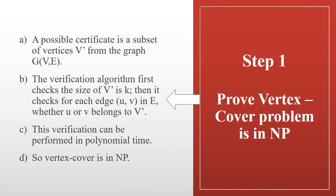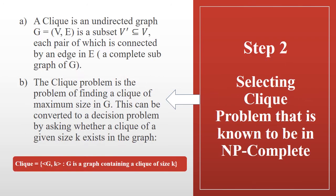Step one: we prove that the vertex cover problem is in NP. Given a certificate — basically a solution for vertex cover — we can verify in polynomial time if the given set covers all the edges. The complement Ē has exactly those edges not in the given graph, and this verification runs in polynomial time. Therefore, vertex cover is in NP.